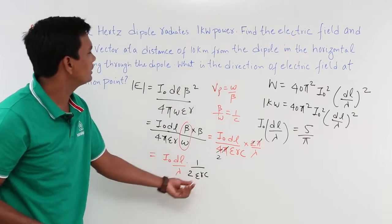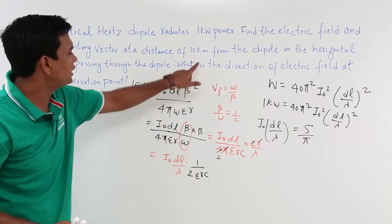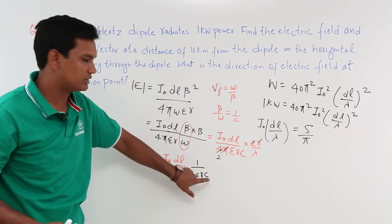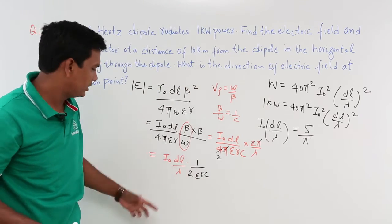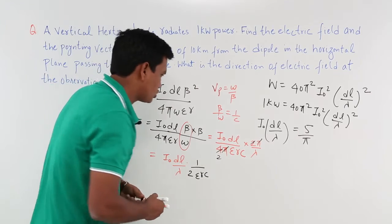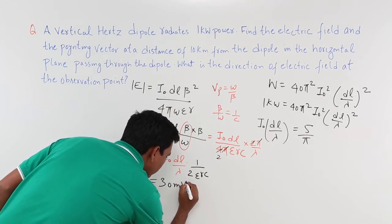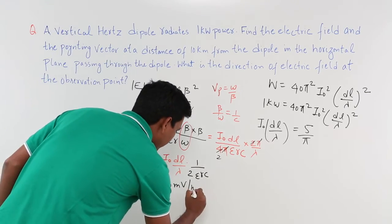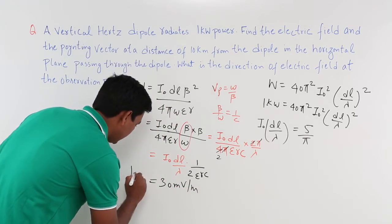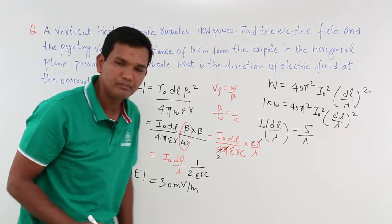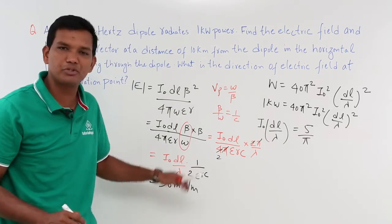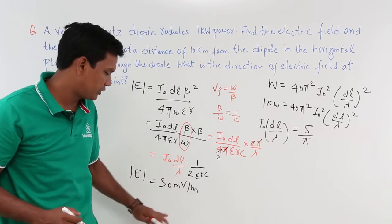Everything I will be everything is known. What is the radius here? Radius we are talking about 10 kilometers. So 10 kilometers, c we know, epsilon also we know. So if I solve this, on solving I will get this is nothing but 30 millivolt per meter. This is what you will get the electric field. On solving of this you can substitute the values you can use the calculator and you can get this value.